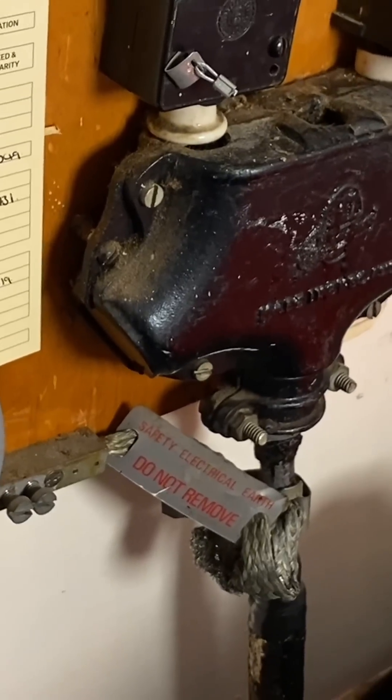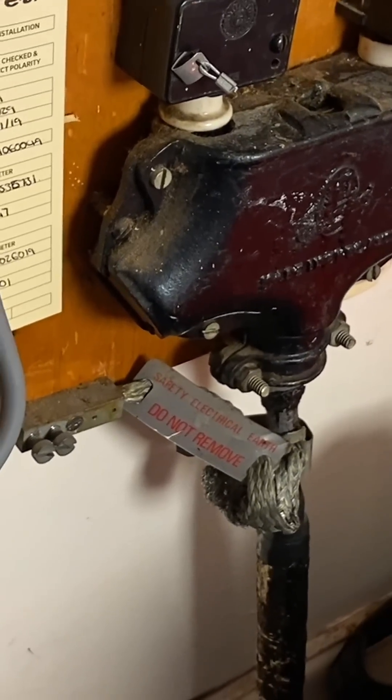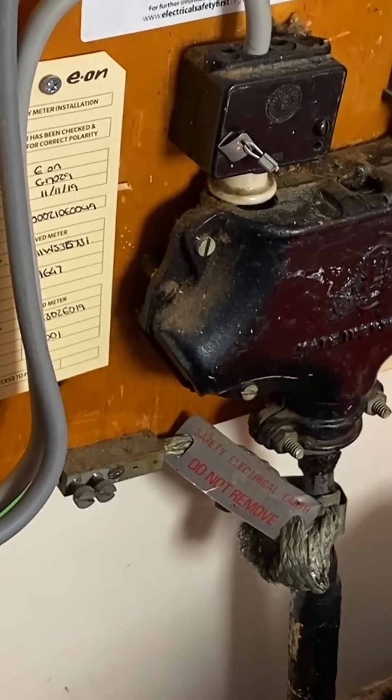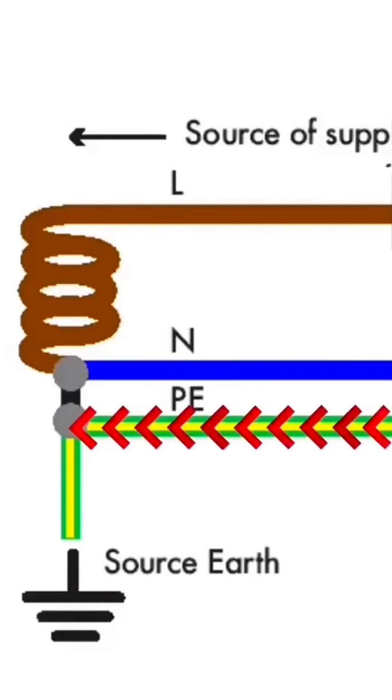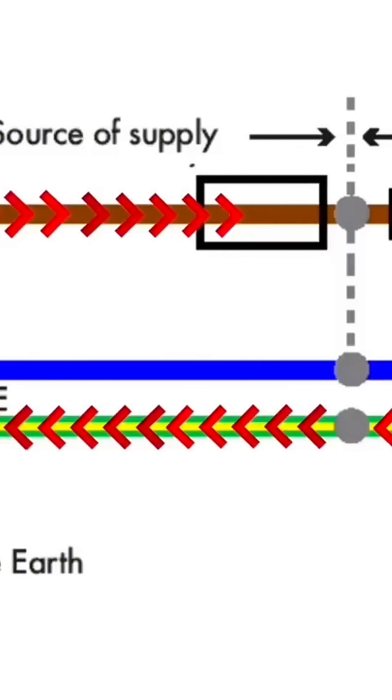The earthing conductor is connected to the lead or steel sheath of the supply authority's cable which becomes live. This is connected to the earth neutral point within the transformer which becomes live. Back round the line conductor completing the circuit.